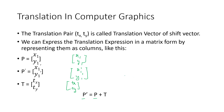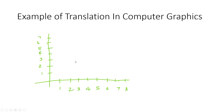Now we'll look at an example to understand this. Let's say we want to translate this line. We have this line, and let's call the endpoints x1 and y1. The x1 point has coordinates 1 comma 1 — that is, x coordinate is 1 and y coordinate is 1. And y1 has coordinates 2 comma 1.